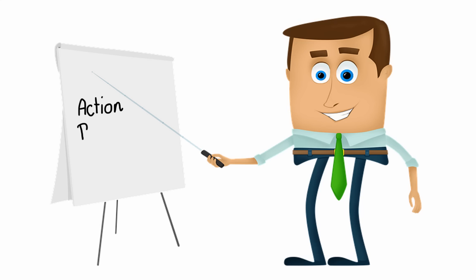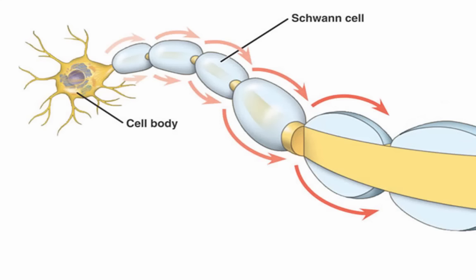In this video, I'm going to explain an action potential. An action potential, or a nerve impulse, causes a movement of ions across the cell membrane of a neuron, similar to a ripple passing along the surface of a pond.